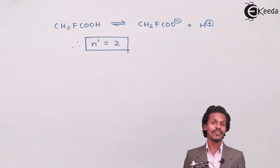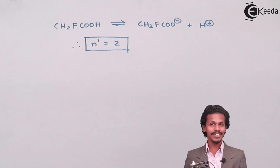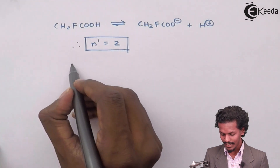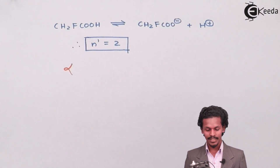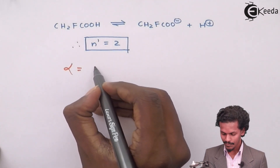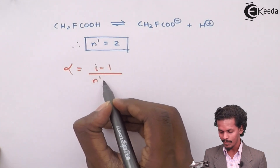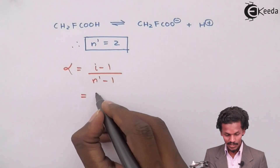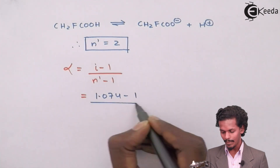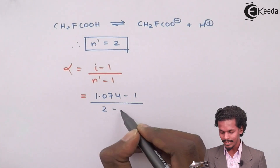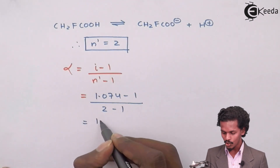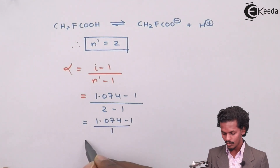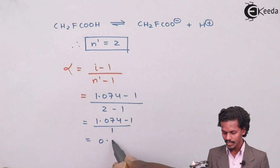Now that we have n̄, we substitute into the degree of dissociation formula: alpha = (i − 1) / (n̄ − 1). With i = 1.074 and n̄ = 2, we get alpha = (1.074 − 1) / (2 − 1) = 0.074 / 1 = 0.074. So the degree of dissociation is 0.074.